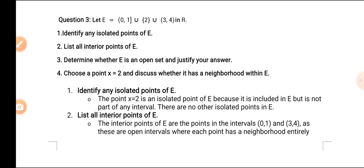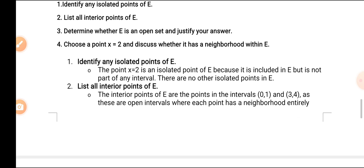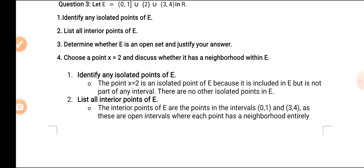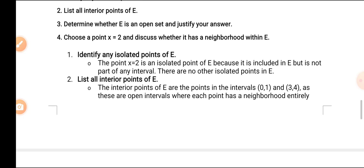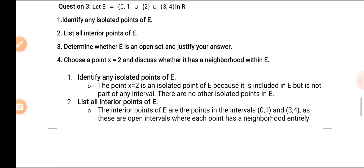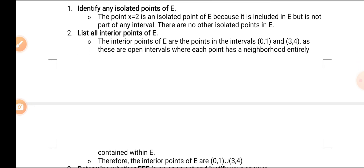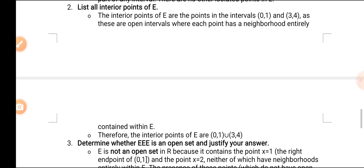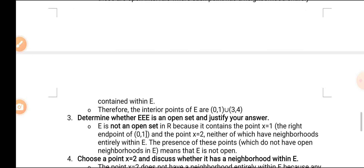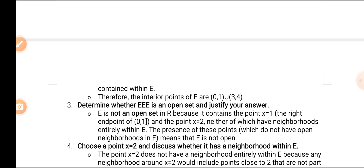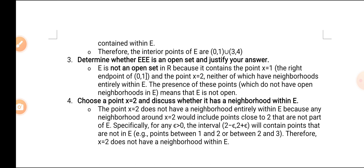There are no other isolated points in E, meaning x = 2 is the only isolated point. For the second part, list all interior points of E. The interior points of E are the points in the intervals (0,1) and (3,4), as these are open intervals where each point has a neighborhood entirely contained within E. Therefore the interior points of E are (0,1) ∪ (3,4).